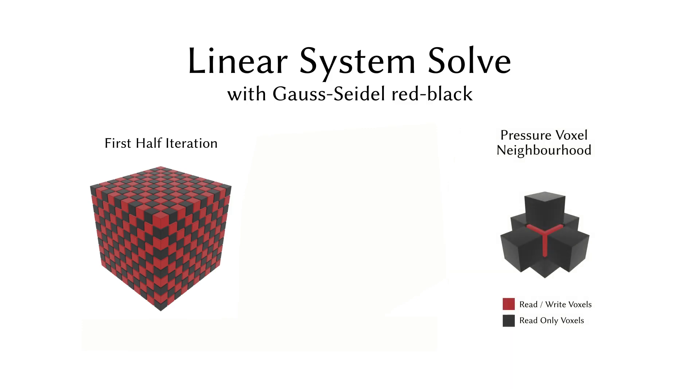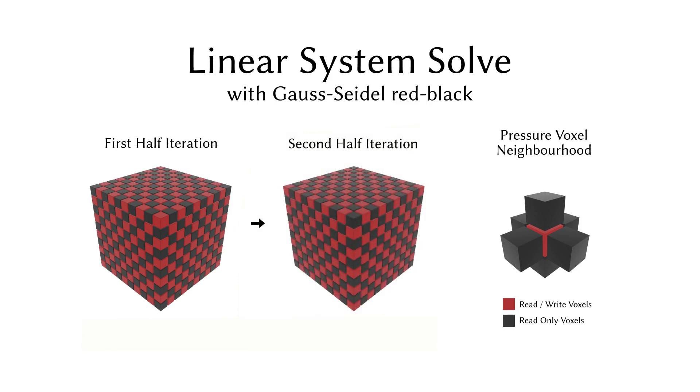The Gauss-Seidel update of a pressure voxel will involve itself and all its direct neighboring voxels tagged with a different color, meaning those are ready for the course of the first half iteration. The second half iteration will update the other color while keeping the previously updated colors unchanged. This two-step process eliminates the write hazards inherent to parallel implementation of the Gauss-Seidel algorithm, thus ensuring deterministic results.